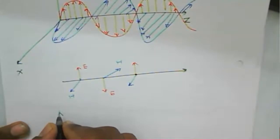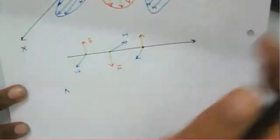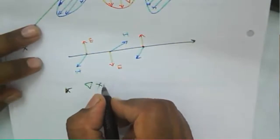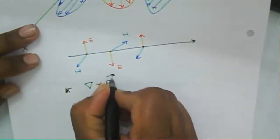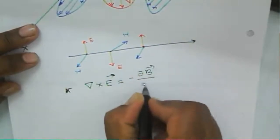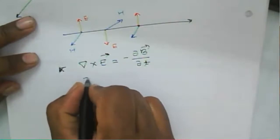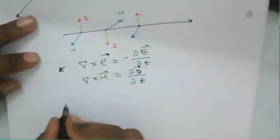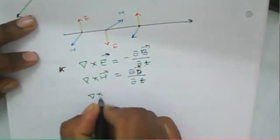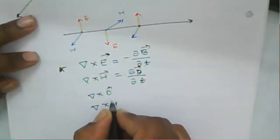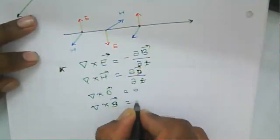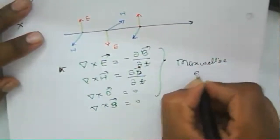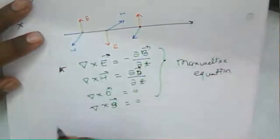Writing the wave equation: we express the electric field component and magnetic field component using Maxwell's equations. These include Faraday's law, Ampere's circuit law (MTS law), and Gauss's law — all written in terms of free space. This gives us Maxwell's equations, from which we can derive the wave equation.